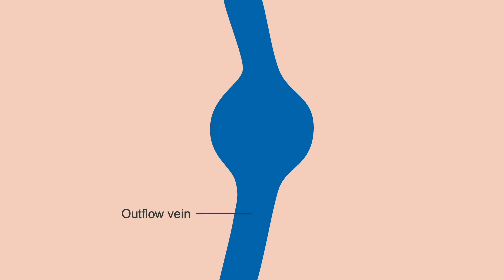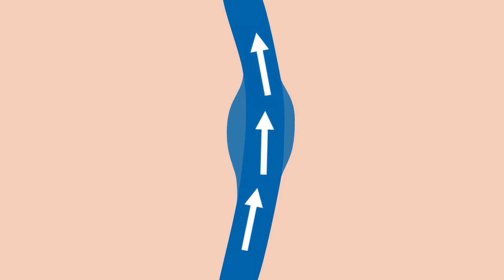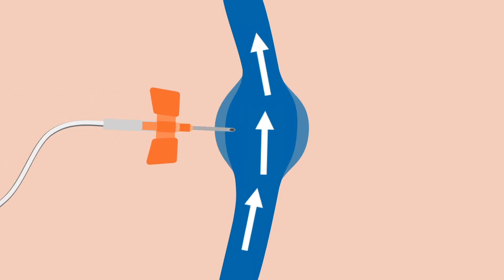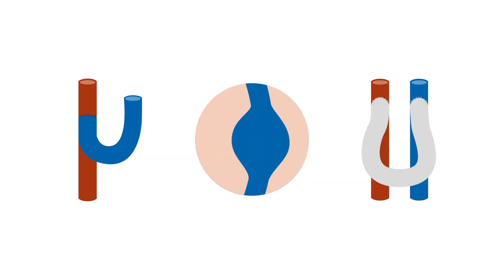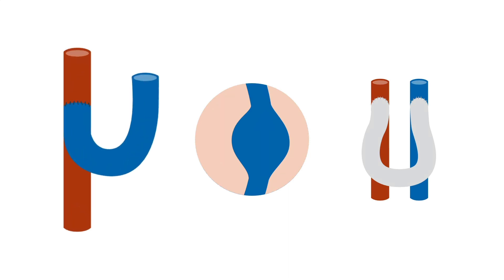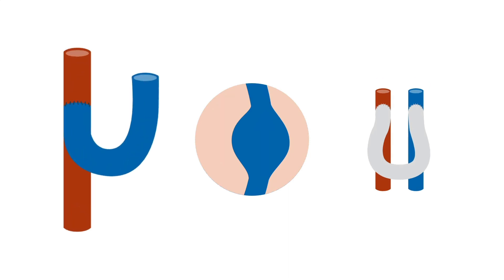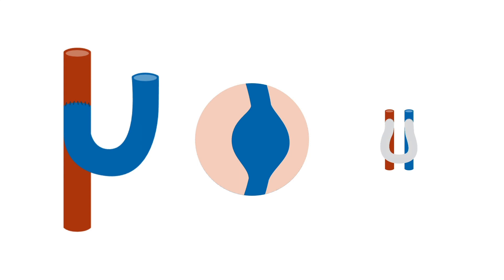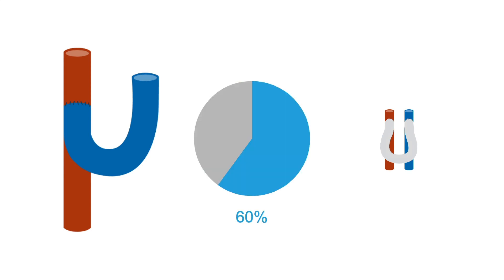Aneurysms appear as focal dilations of the outflow vein wall. They form as blood flow through the vessel increases and repeated needle punctures weaken the outflow vessel walls. Aneurysms are frequently seen with arteriovenous fistulas and less commonly with arteriovenous grafts. In fact, up to around 60% of patients with fistulas and grafts will experience an aneurysm.